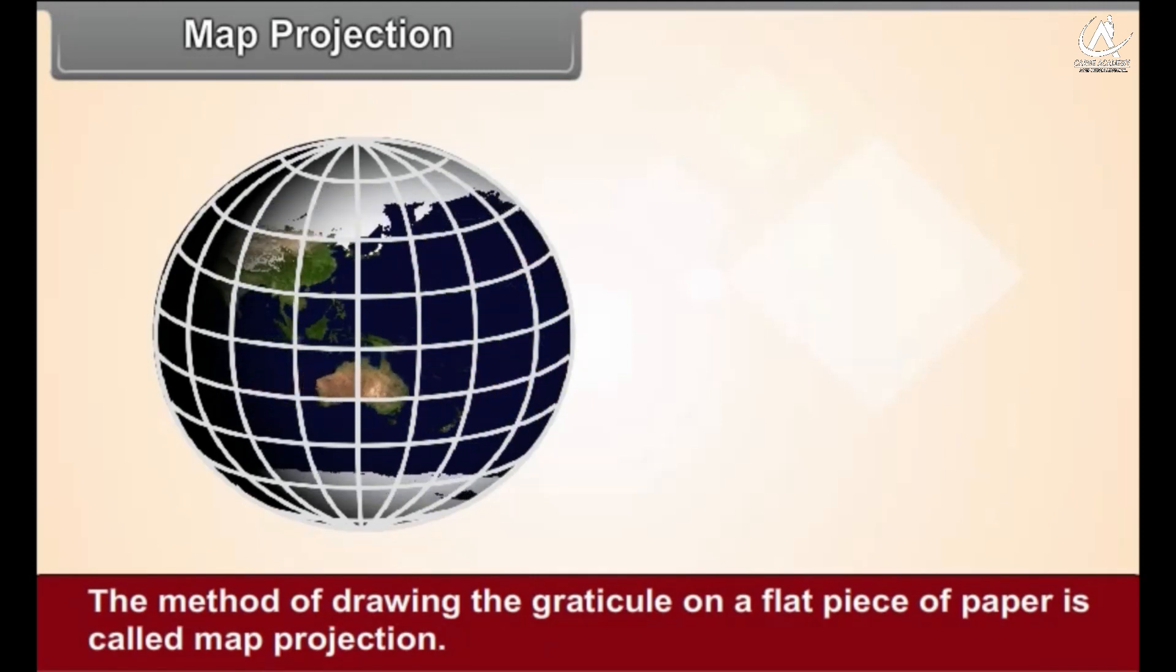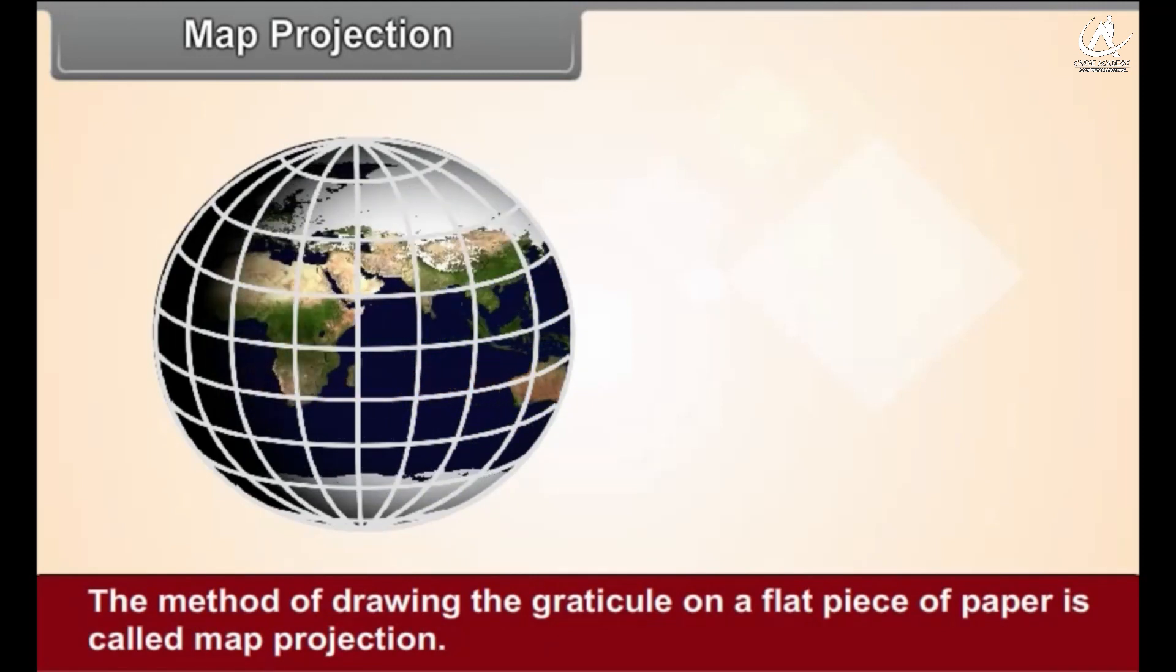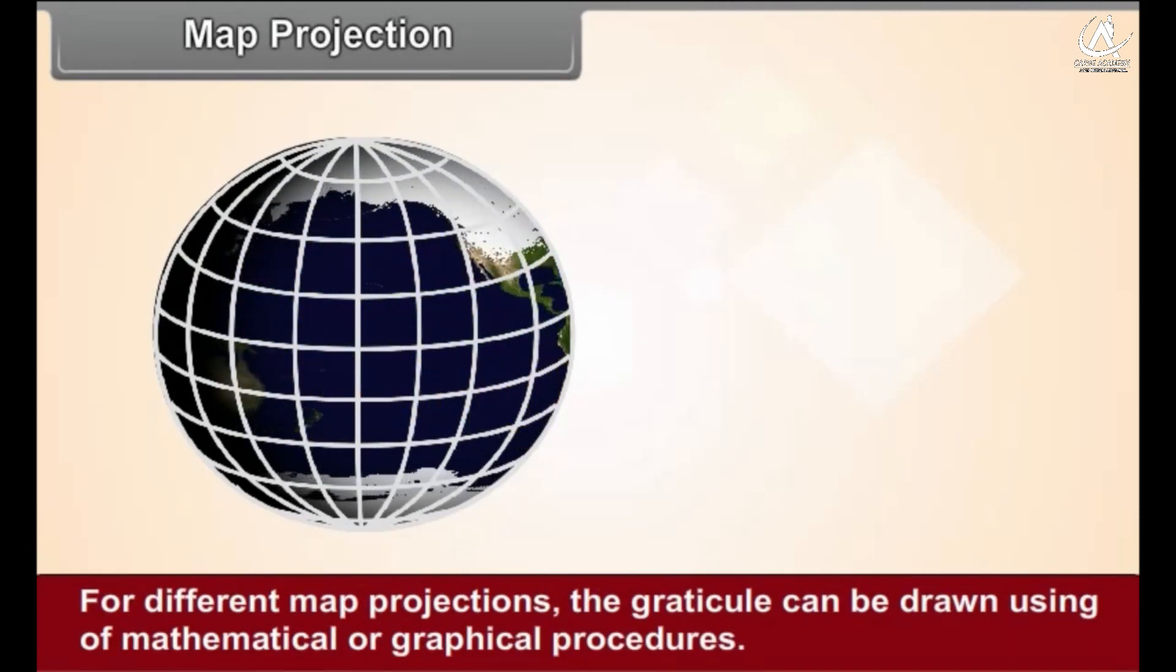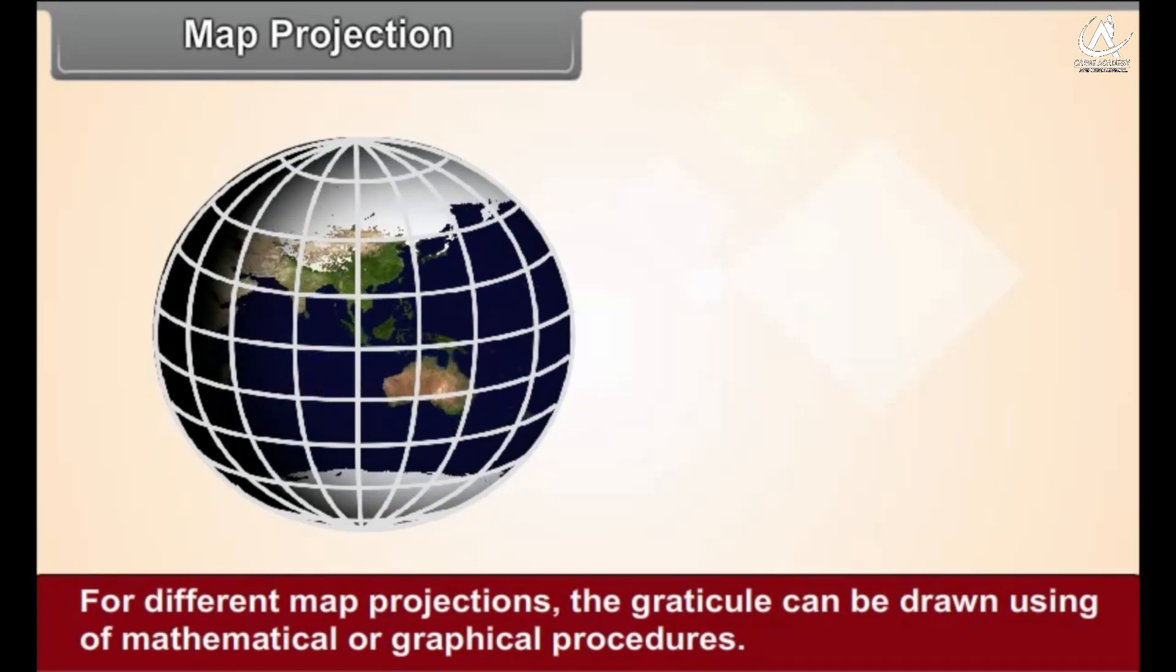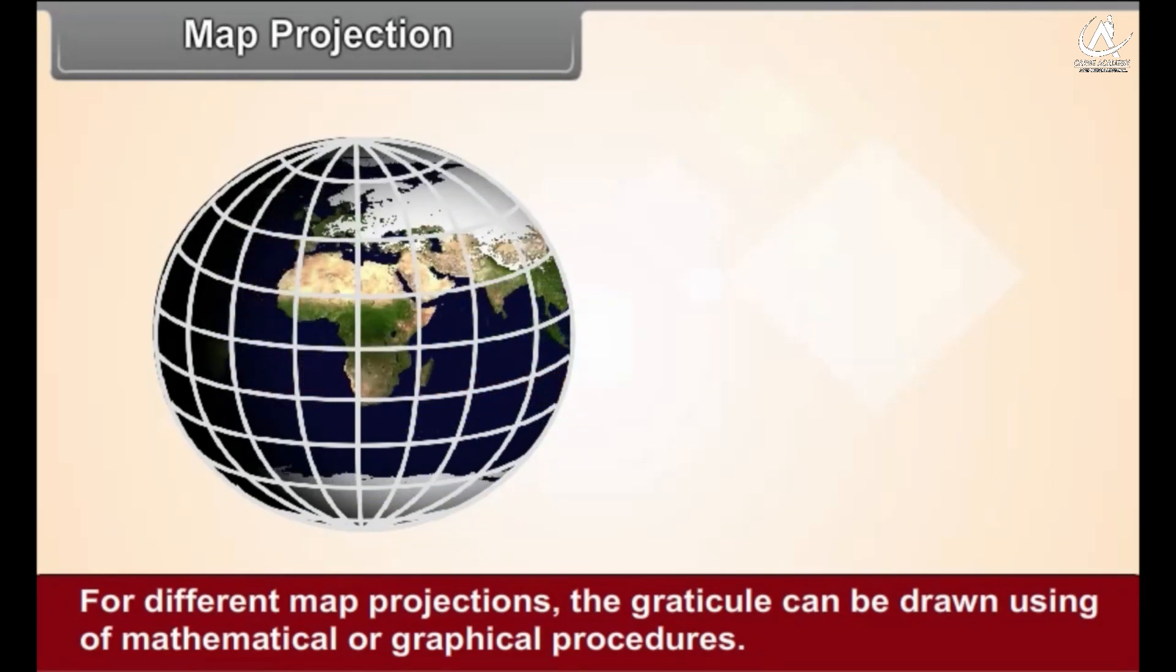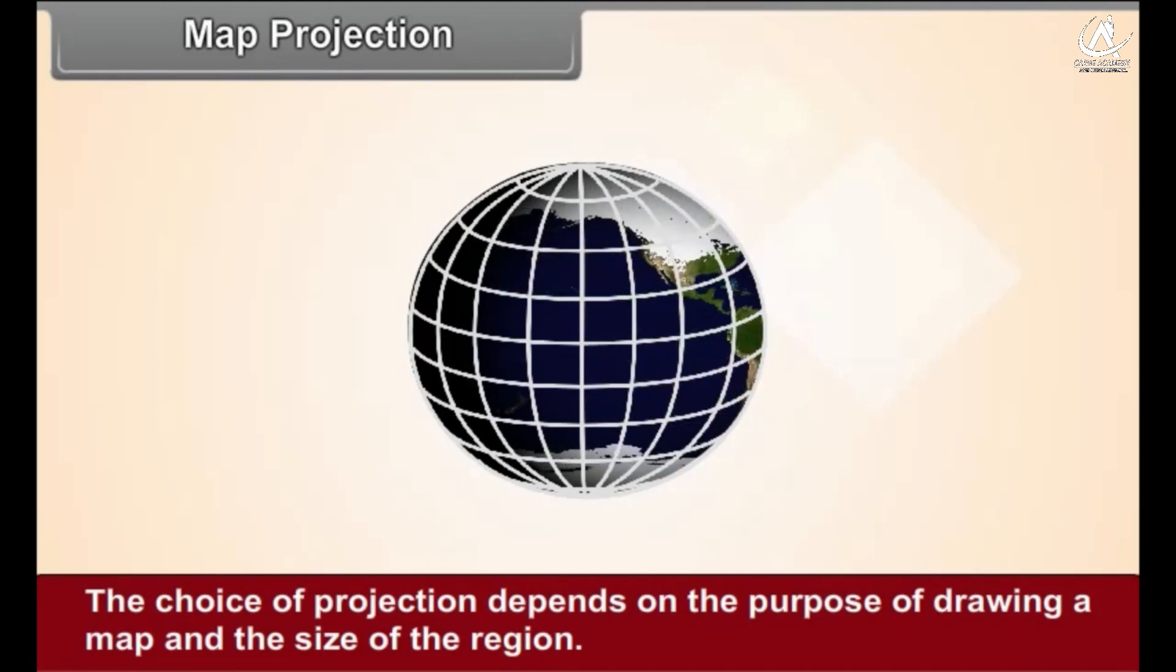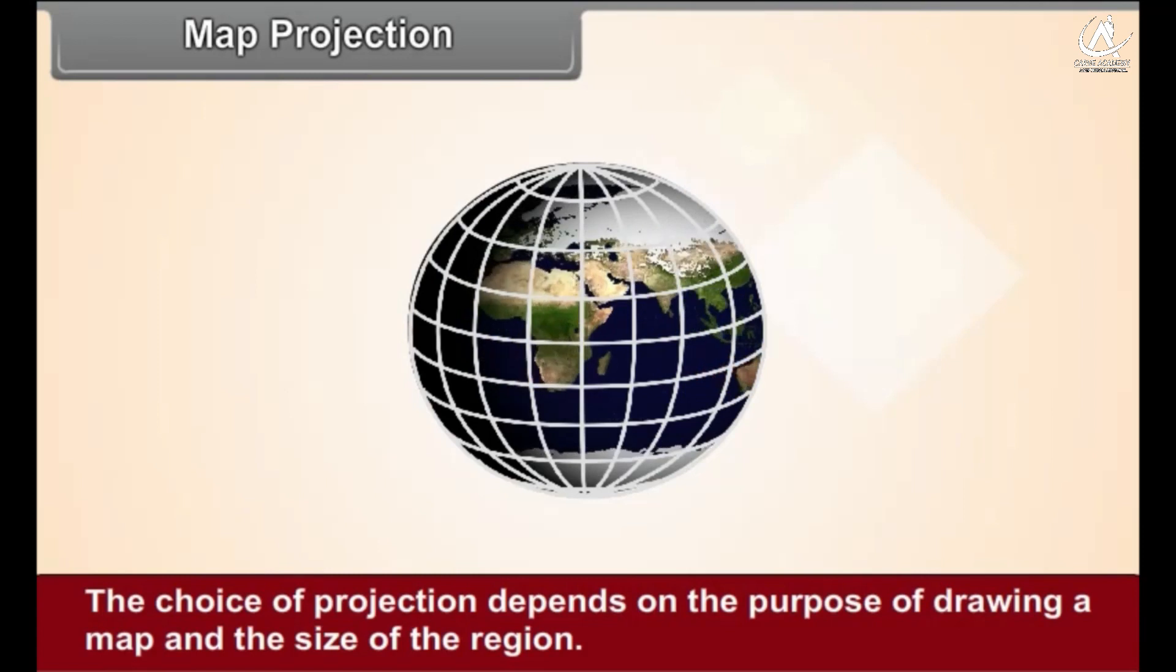The method of drawing the graticule on a flat piece of paper is called map projection. For different map projections, the graticule can be drawn using mathematical or graphical procedures. The choice of projection depends on the purpose of drawing a map and the size of the region.